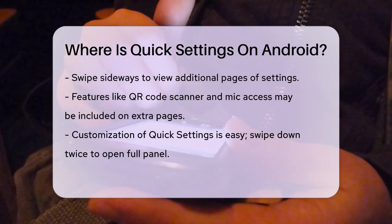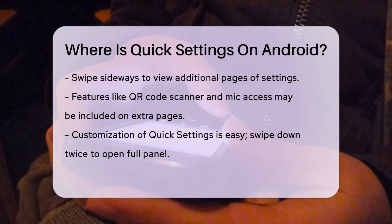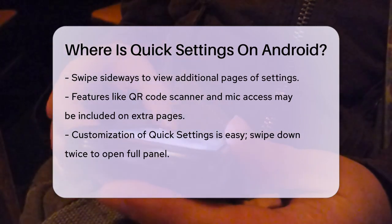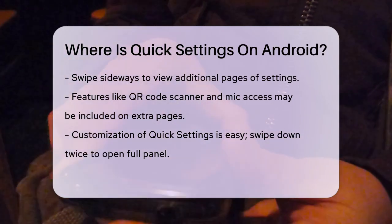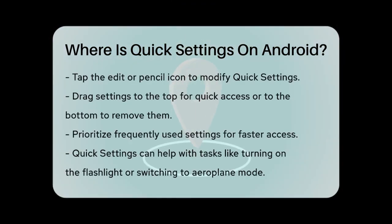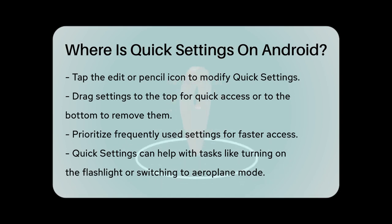Customizing the Quick Settings panel is also a breeze. Swipe down twice to open the full panel, then tap the Edit or Pencil icon at the bottom right. Here, you can see all the available Quick Settings and drag them to the top section to add them to your Quick Access menu, or drag them to the bottom to remove them. This customization allows you to prioritize the settings you use most often, making it even quicker to access what you need.